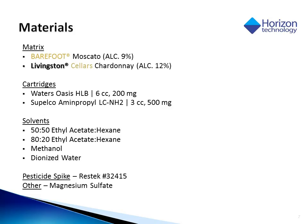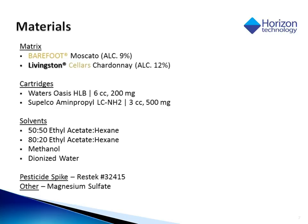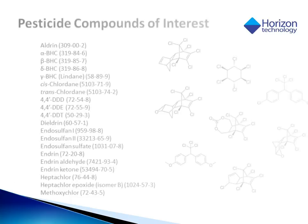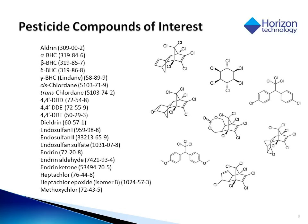The following are the materials we used for this particular study. We have chosen two different types of wines — one on the sweeter side, and one that is drier and also has a higher alcohol content. The two were chosen to see if there were any differences between these two types of wine. The following is a list of the pesticides of interest, which are spiked into our samples at known amounts.